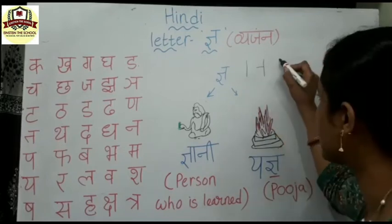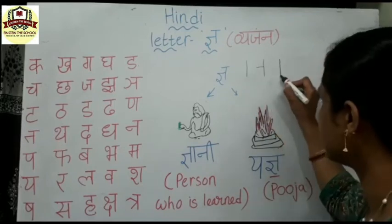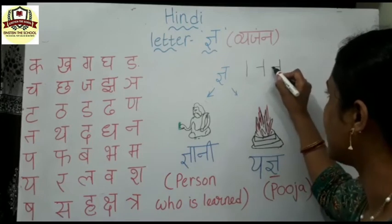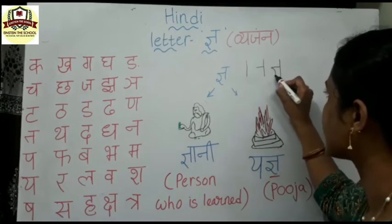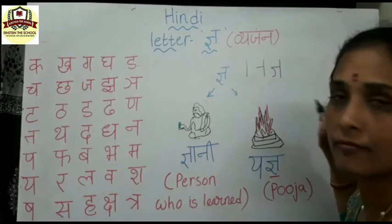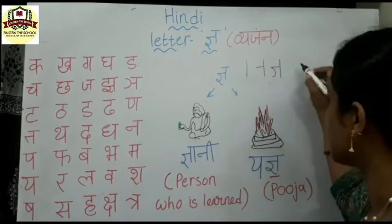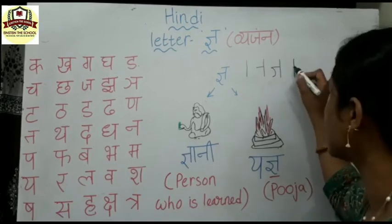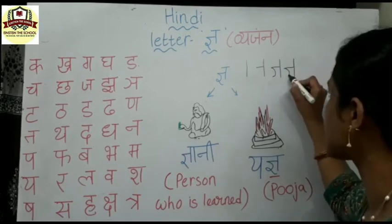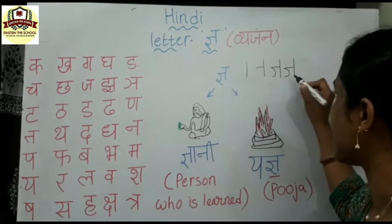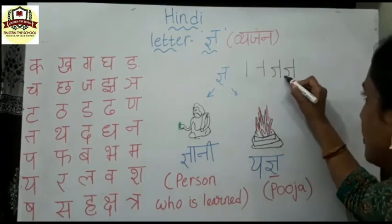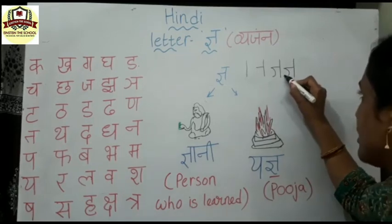After writing the standing line, towards the left side from the middle, write a sleeping line. Now after this, write a loop or turn.